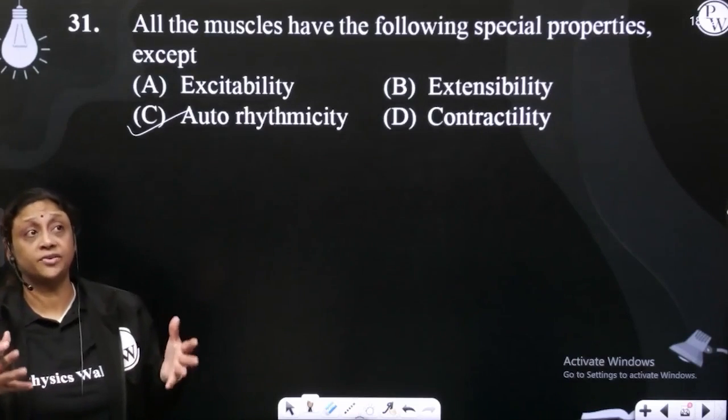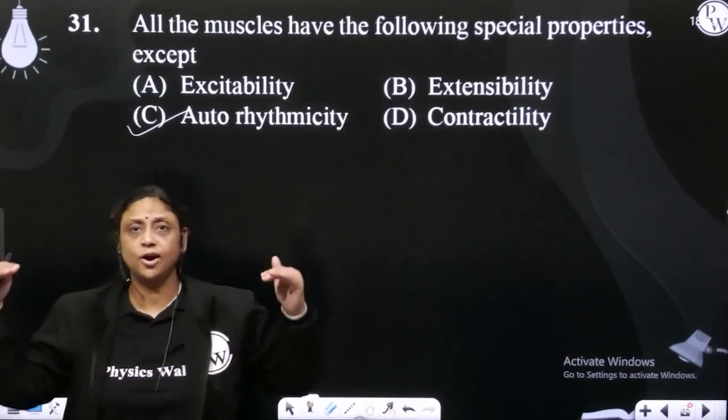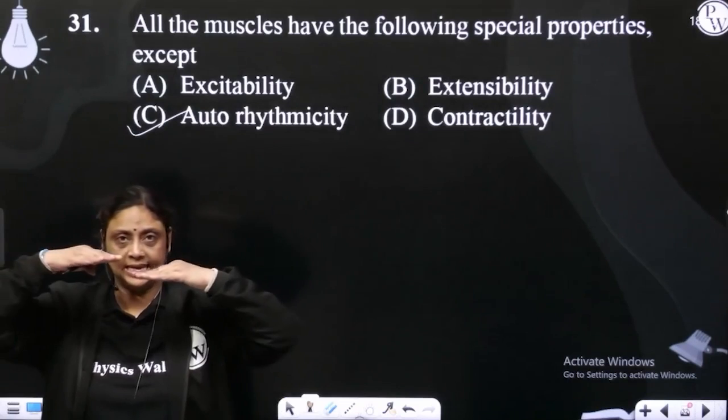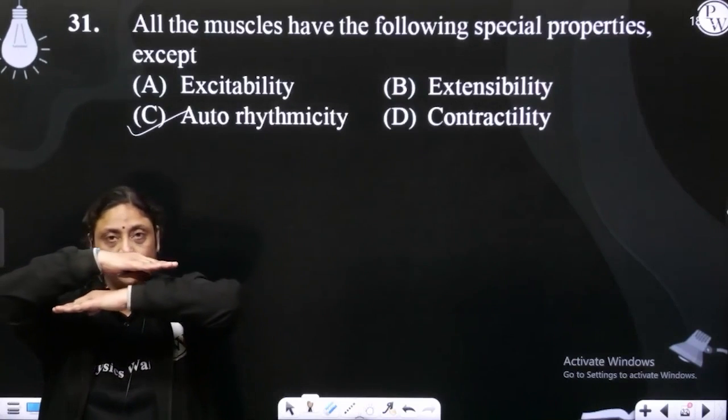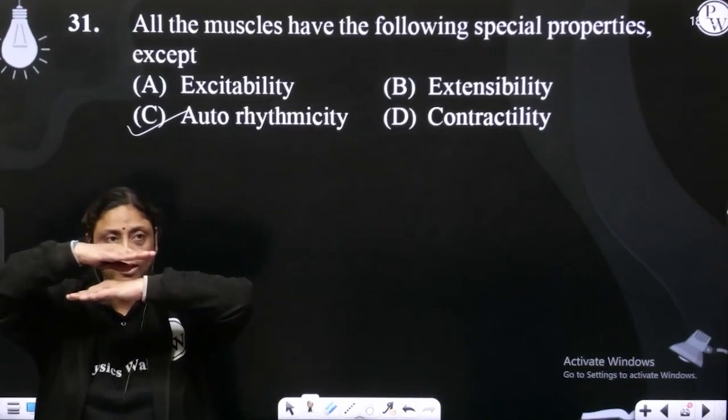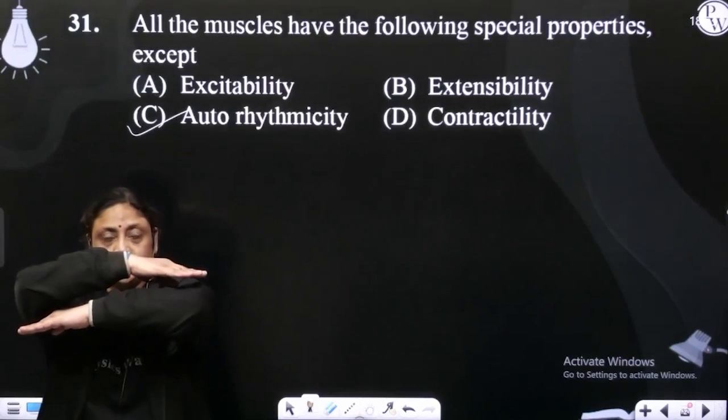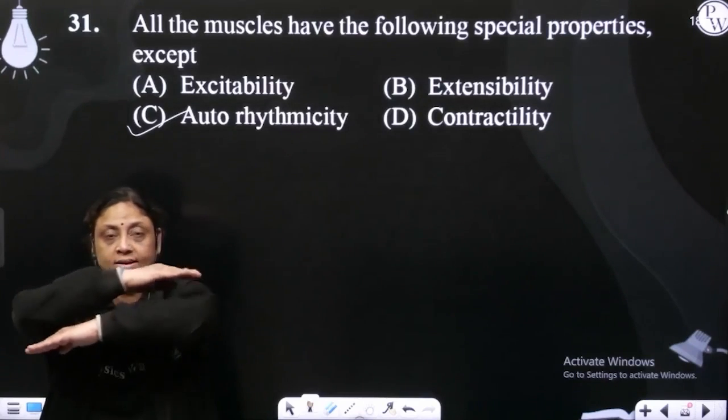Contractibility. Contractibility means sliding of actin over myosin. H-zone overlap. H-zone disappears. Actin overlapping. It's called contraction. Sliding. Contractibility.